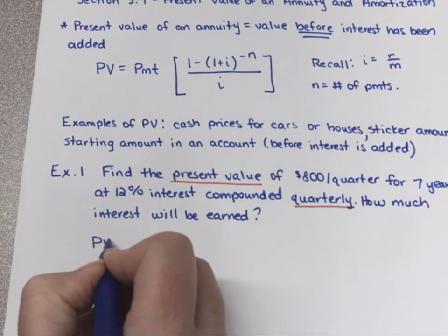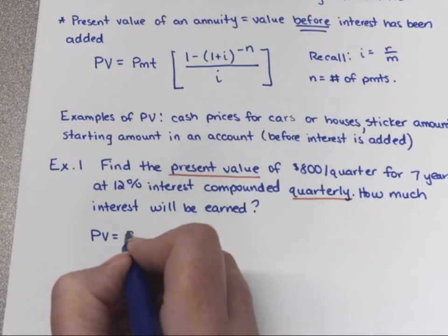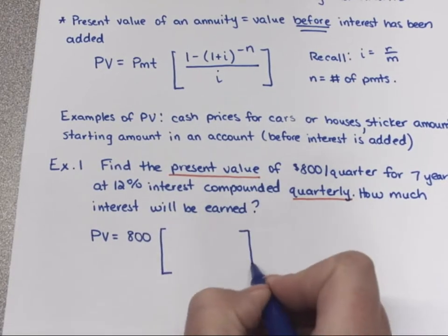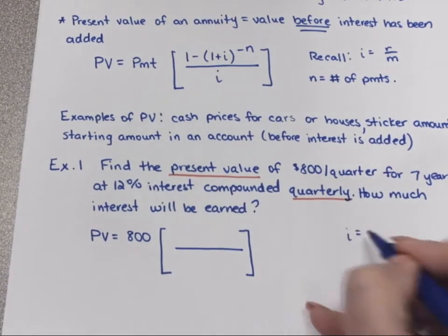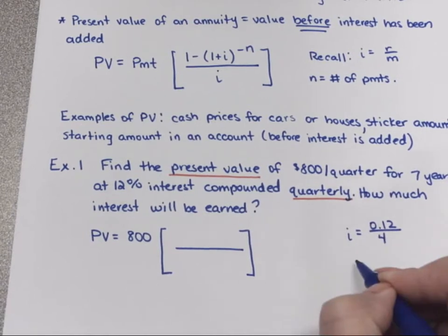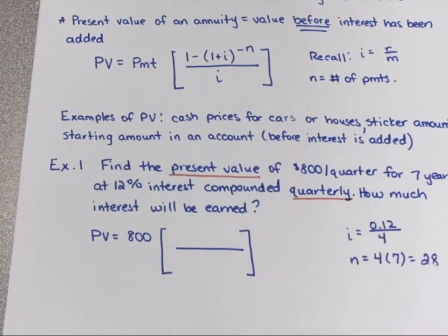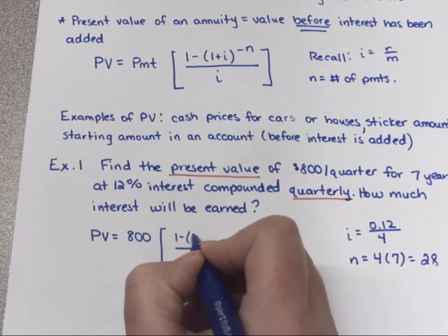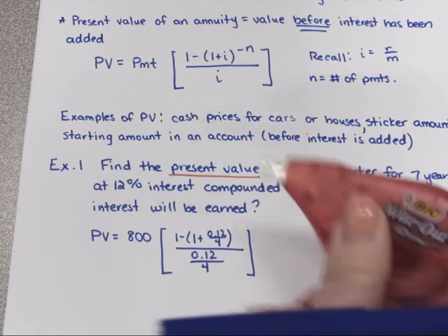Using the present value formula, the payment is $800. We set up a bracket with a fraction inside. The interest rate i equals 0.12 over 4 since it's quarterly, and n equals the number of total payments: 4 times a year for 7 years gives us 28 payments. On the bottom we have 0.12 divided by 4, and on the top we have 1 minus (1 plus that same fraction) raised to the negative 28 power. Remember, this formula has a negative exponent — that gives us a fraction, not a negative amount of money.